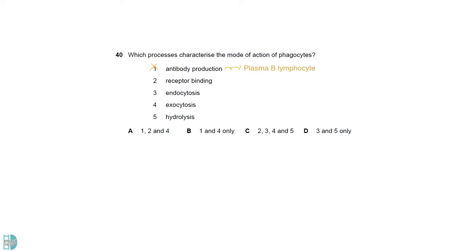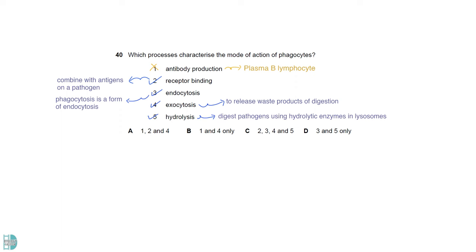One is not true, and the antibody production is a role of plasma B lymphocytes. Two is correct. Phagocytes use their receptors to combine with antigens on the pathogen before they engulf it. Three is true, since phagocytosis is a form of endocytosis. After phagocytosis of bacteria and other foreign particles, waste products of digestion are released by exocytosis. So four is correct as well. Phagocytes digest the pathogens they engulf using the hydrolytic enzymes in lysosomes. So five is true.